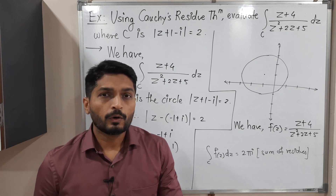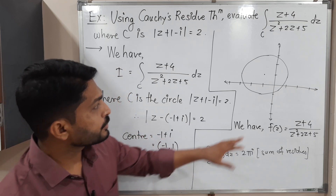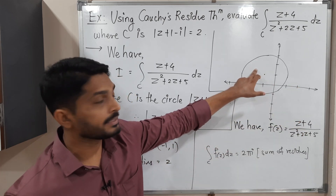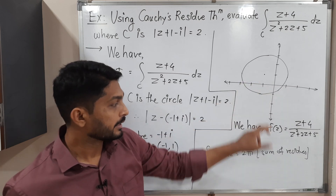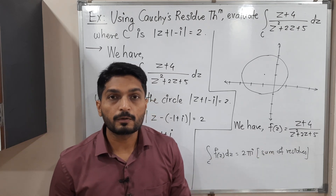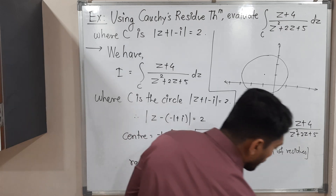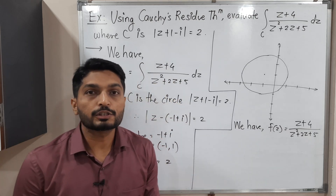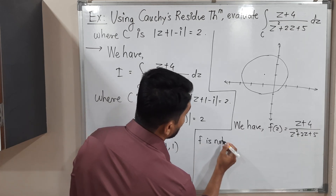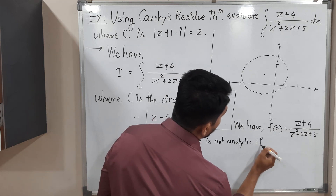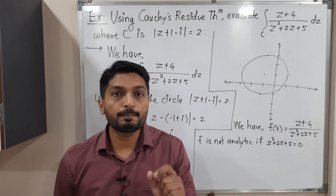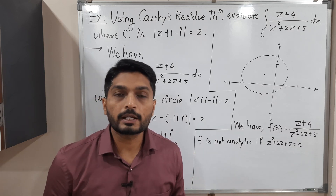By Cauchy's residue theorem, we must find the points where the function is not analytic — the singular points — which are where the denominator is zero. If a singular point lies outside the circle, no residue calculation is needed. If it lies inside, we calculate the residue at that point. The sum of residues multiplied by 2πi gives the value of the integral.